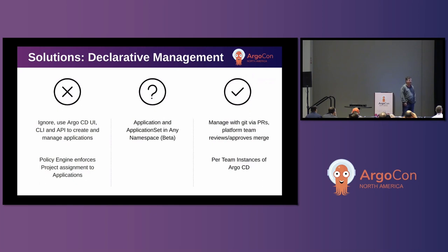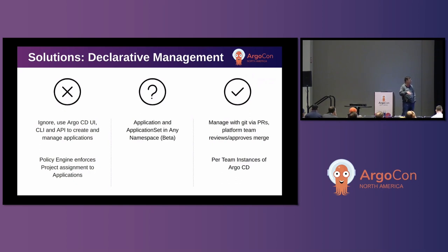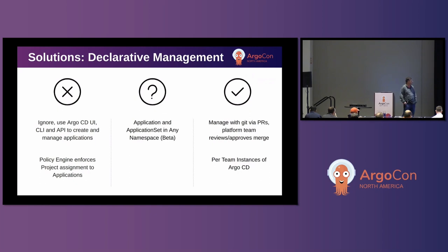You can potentially use a policy engine — I experimented with Kyverno to enforce applications getting particular projects, but it doesn't scale well because you need to know a lot about the user. In the 'consider' category, there's 'applications and application sets in any namespace,' currently in beta, which allows applications in namespaces outside of Argo CD so teams can declaratively manage that. However, for organizations that can't use beta software, this may be a no-go. At Red Hat, we consider these tech preview and don't support them in production yet, though we have an upstream issue open to promote this to stable.